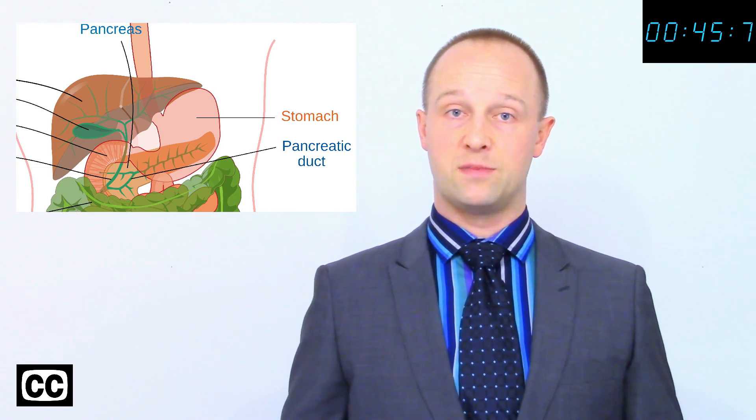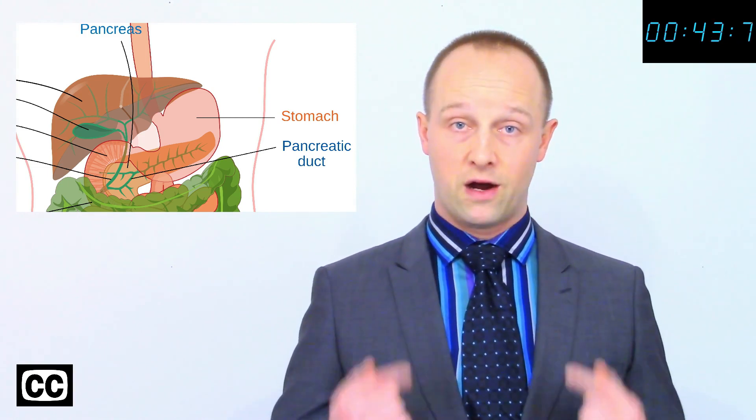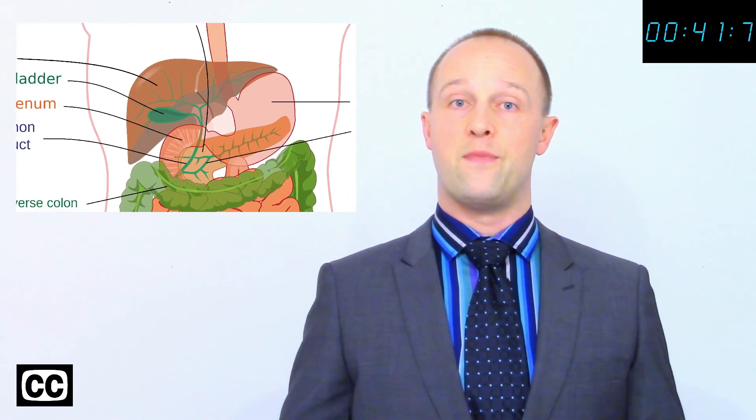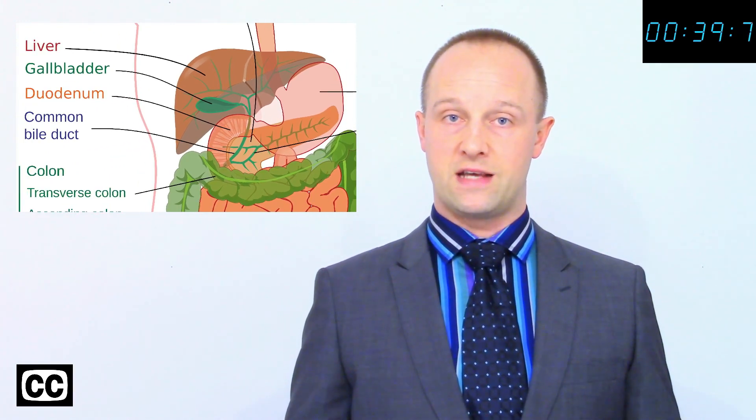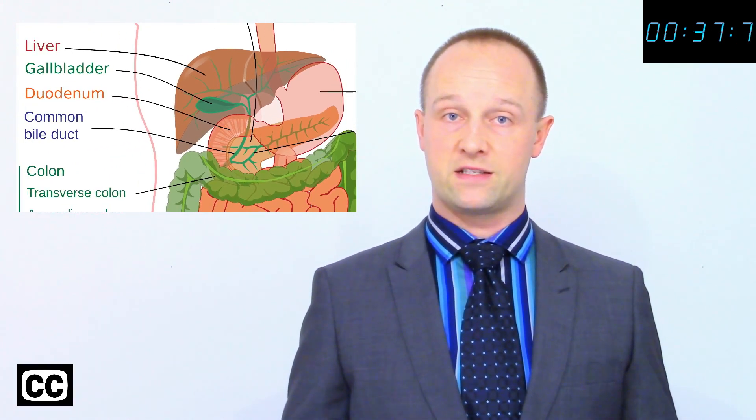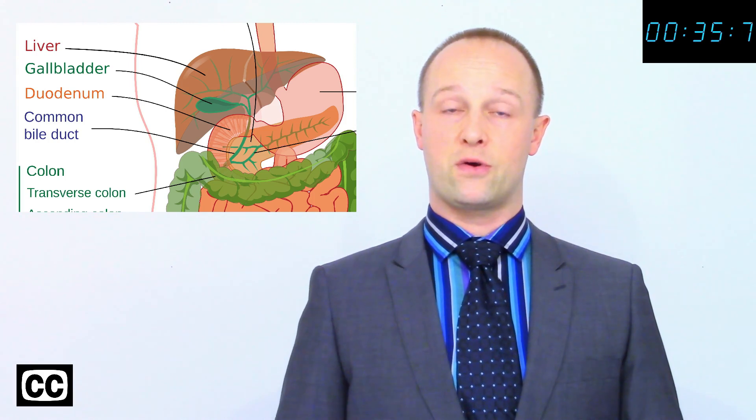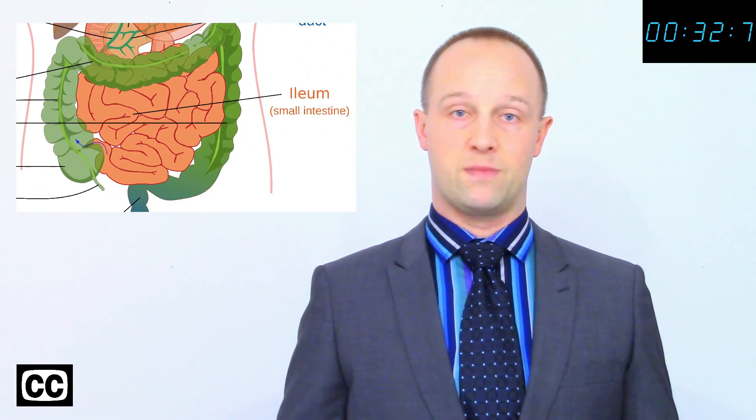The low pH there denatures enzymes in bacteria and is also necessary for our own enzymes like pepsin to work. From there bile from the gallbladder neutralizes the acid in the duodenum and emulsifies fats and more enzymes are added by the pancreas.